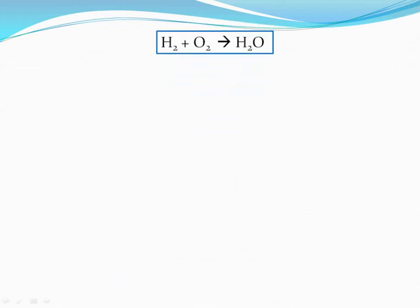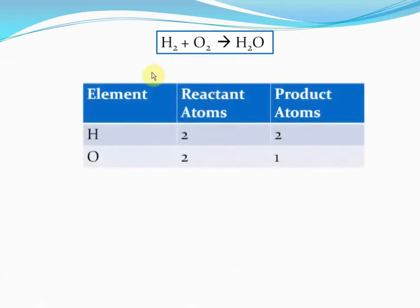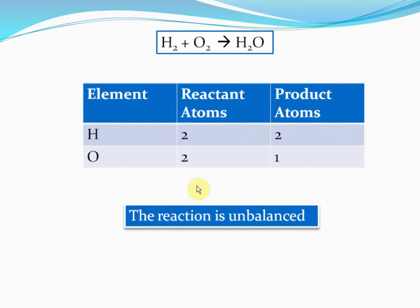Consider this reaction: H2 + O2 → H2O. Hydrogen has two atoms on the left and two atoms on the right. Oxygen, however, has two atoms on the left but only one atom on the right. The net mass on the left is not the same as the net mass on the right, and therefore this reaction is unbalanced. We have to do something else to balance this equation. Now consider zinc reacting with sulfuric acid: Zn + H2SO4 → ZnSO4 + H2. Is this balanced? Zn has one atom each side, H has two each side, S has one each side, and O has four each side. All atoms match, so this reaction is already balanced.